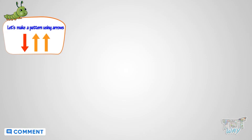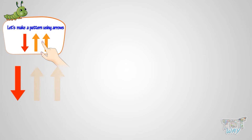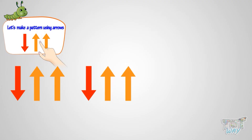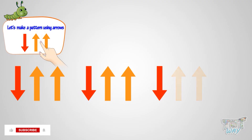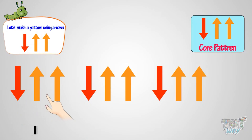Now let's make another pattern using arrows. Let's first make an arrow downwards, then two arrows upwards. Again, one arrow downwards and two arrows upwards. Again, one arrow downwards and two arrows upwards. So the core pattern will be one arrow downwards and two arrows upwards.